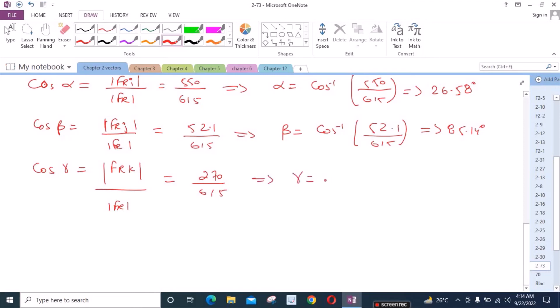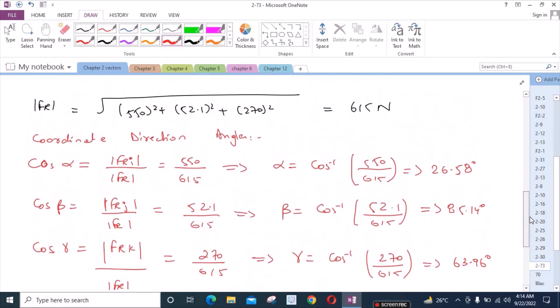For gamma, gamma = cos inverse(270/615) which equals 63.96 degrees. So we have alpha = 26.58 degrees, beta = 85.14 degrees, and gamma = 63.96 degrees. These are the coordinate direction angles for the resultant force. This is the answer to this problem.